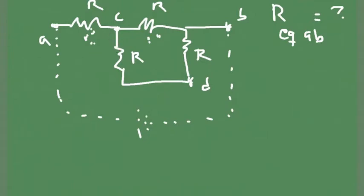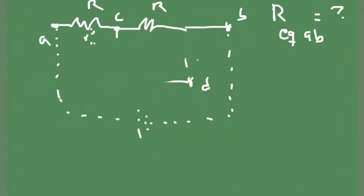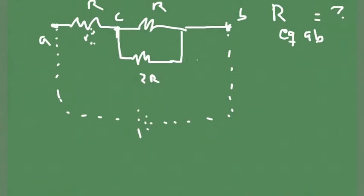So we can simplify those two. We replace those two resistors with one that will do the same job. One that does the same job has resistance R plus R, which is 2R. So I'm going to replace those with 2R here.